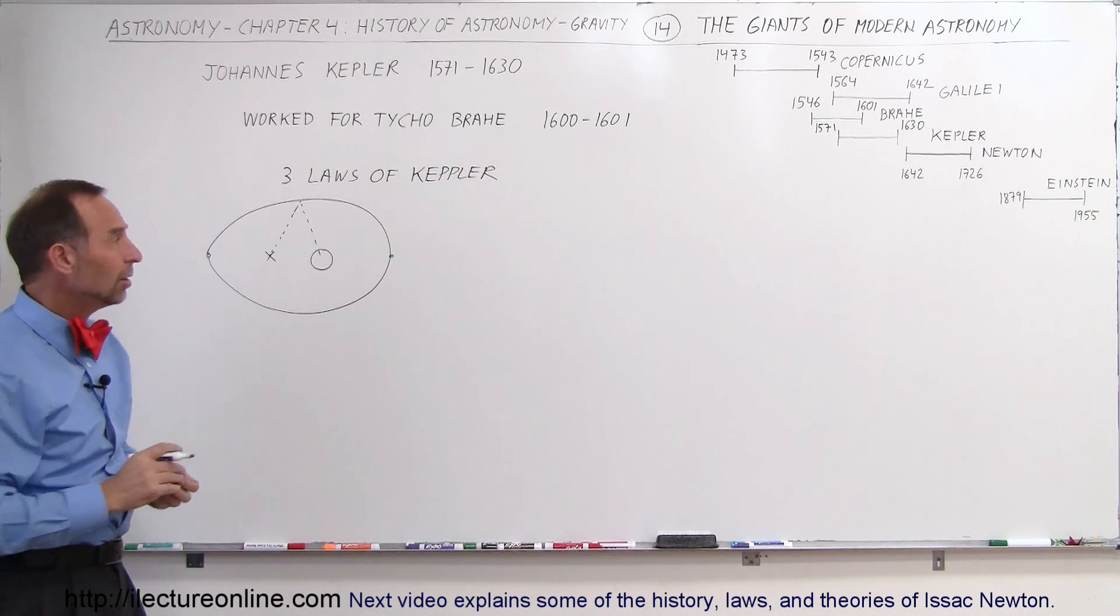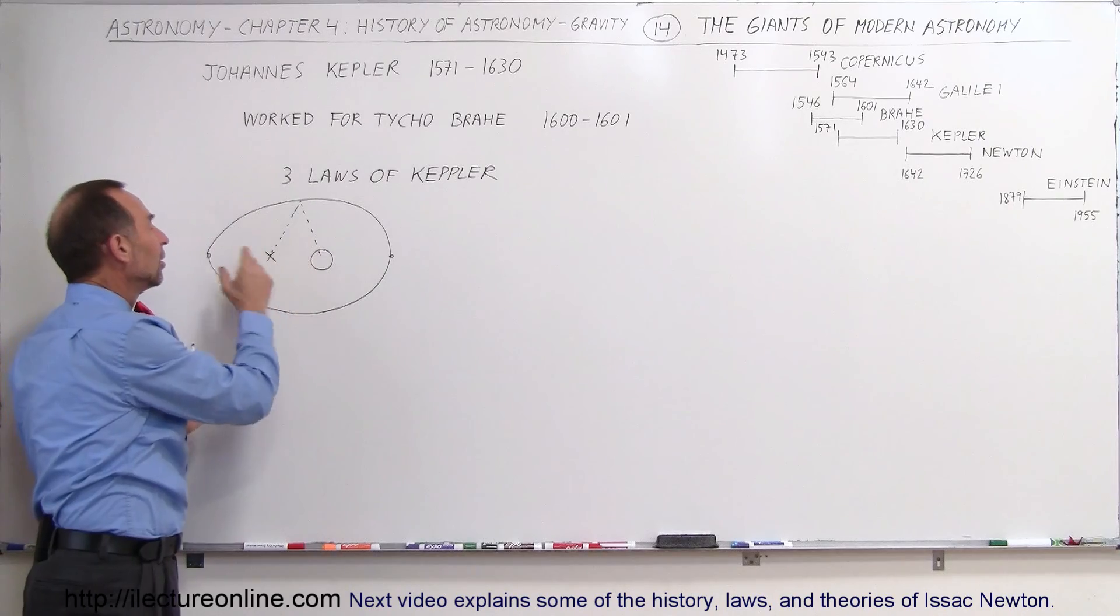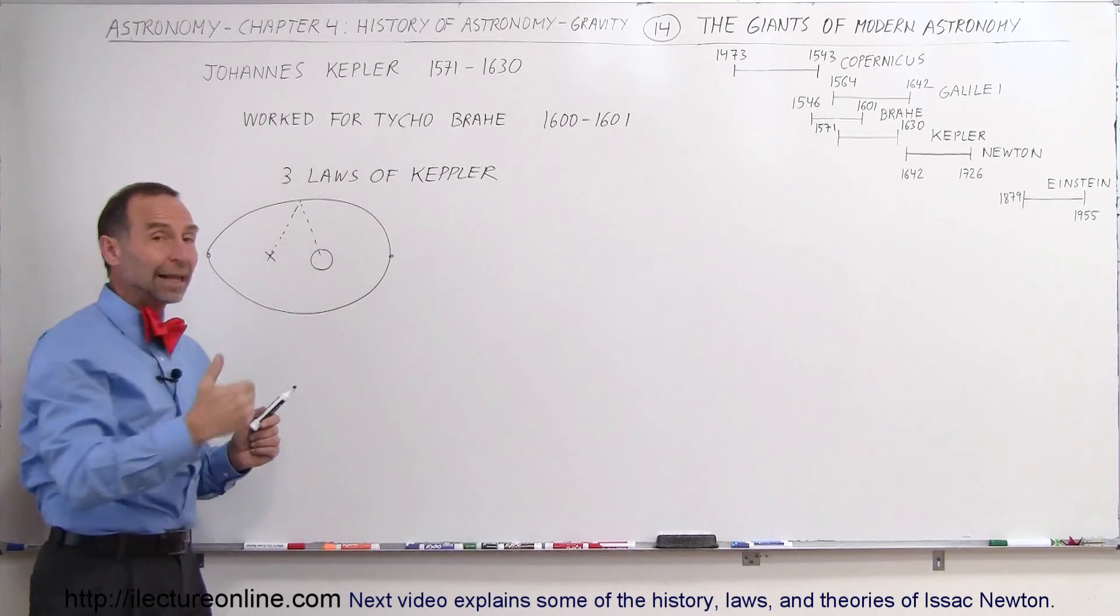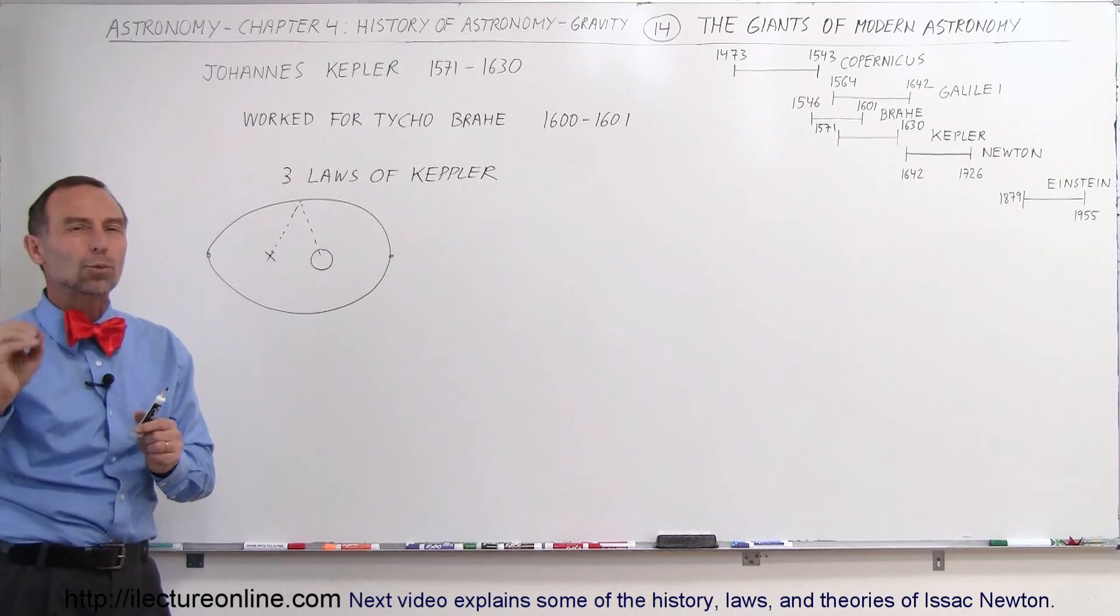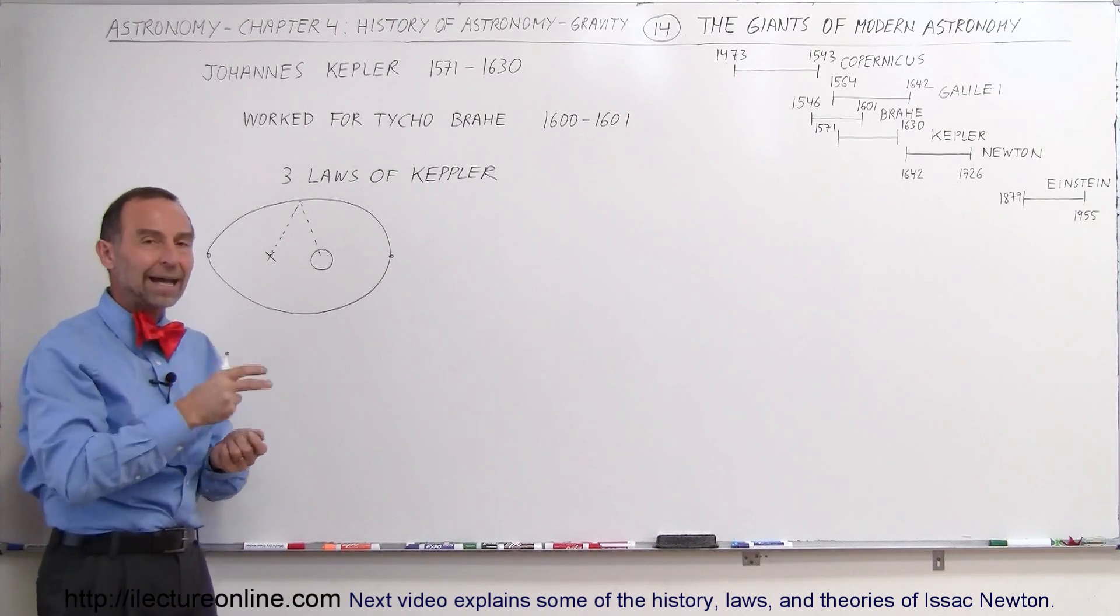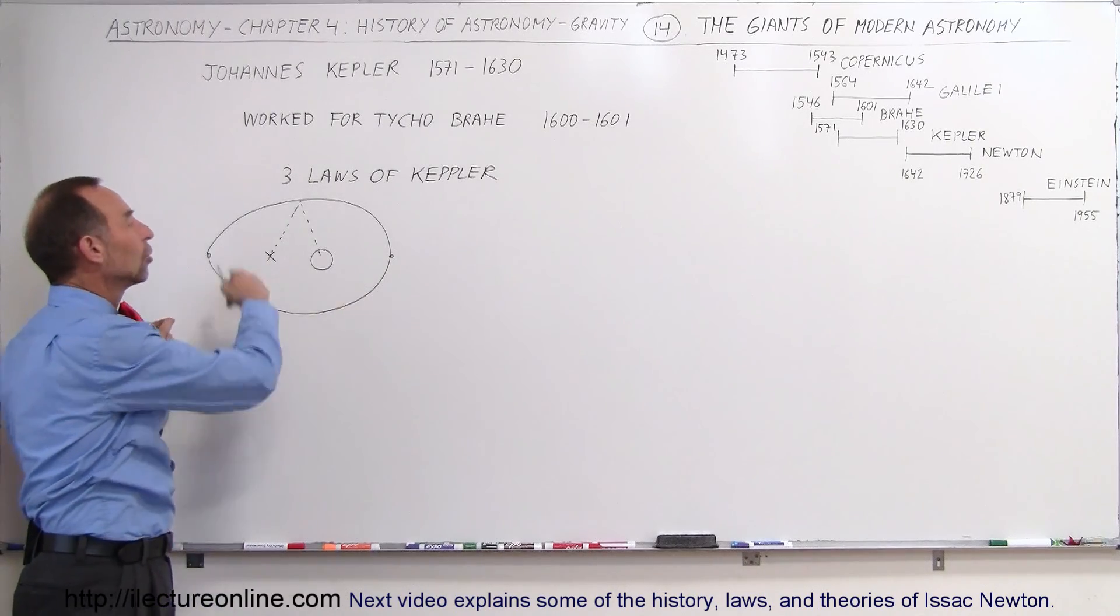The second law of Kepler was that he realized that when the planet was far away from the Sun, the planet slowed down. And when the planet was close to the Sun, the planet sped up. He couldn't explain yet why that happened. Of course, now we realize it is the combined information of the kinetic and potential energy that the planet has as it goes around the Sun.